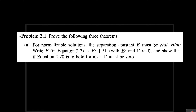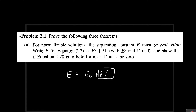In this problem we need to prove that E must always be real. We're going to do that by rewriting E as a combination of a real number E₀ plus an imaginary component. If it is indeed true that E is real, then this imaginary component should be equal to zero. So our goal is to prove that this capital gamma should be equal to zero.